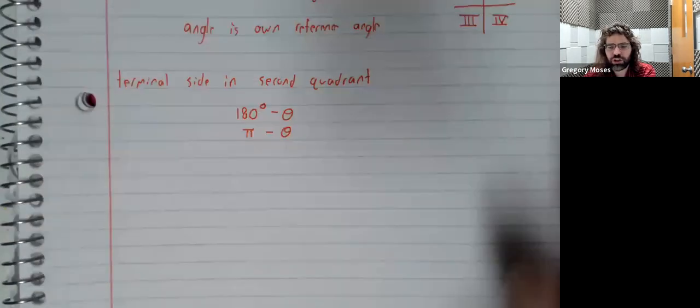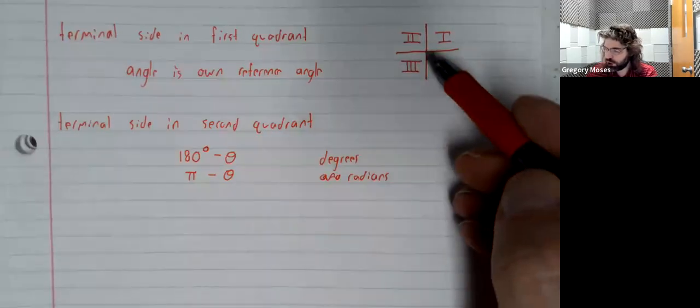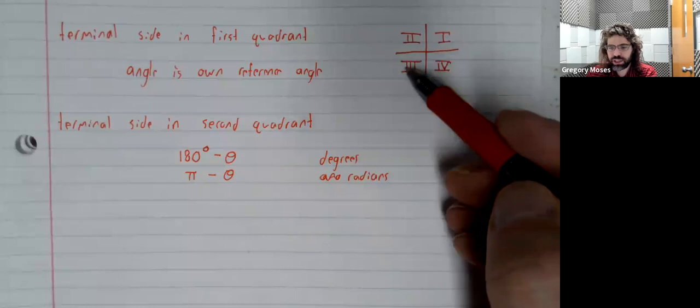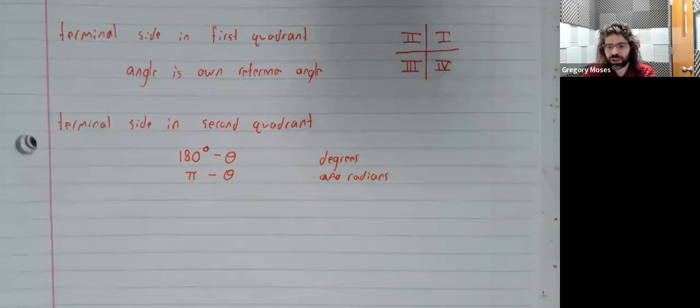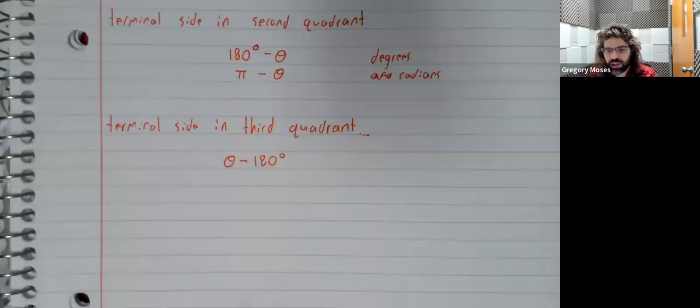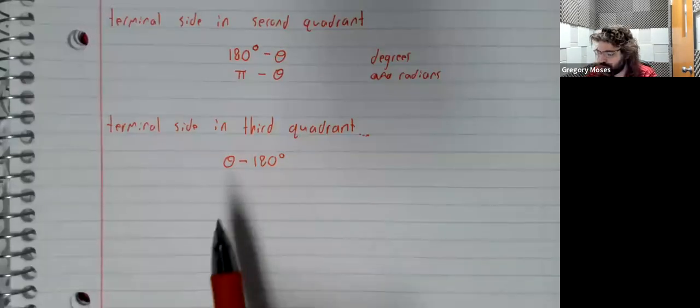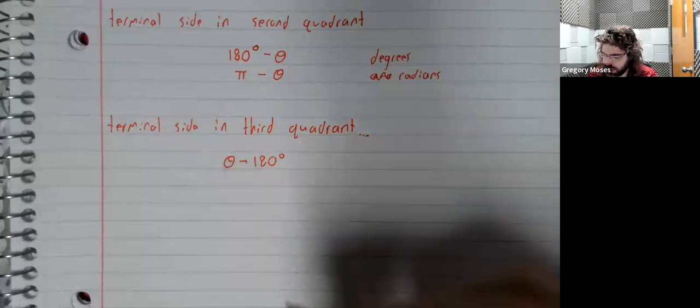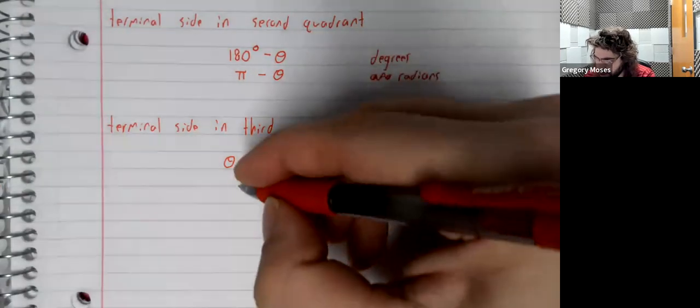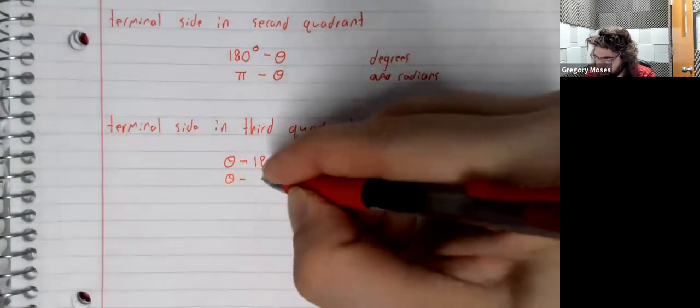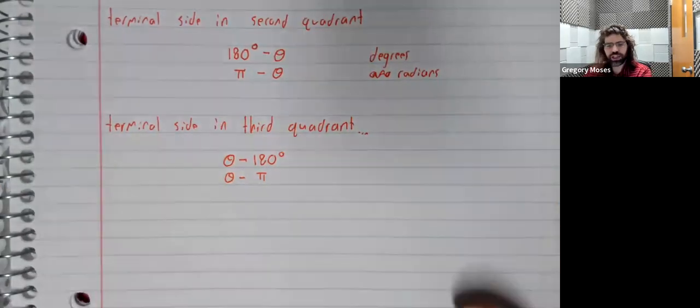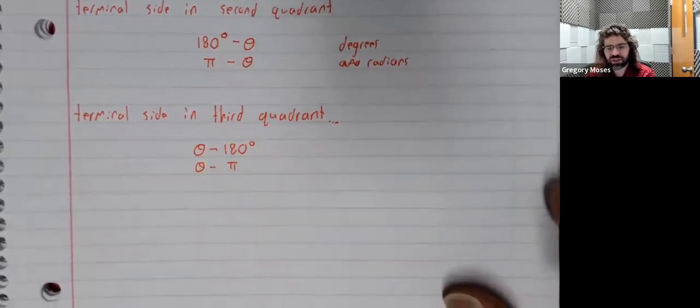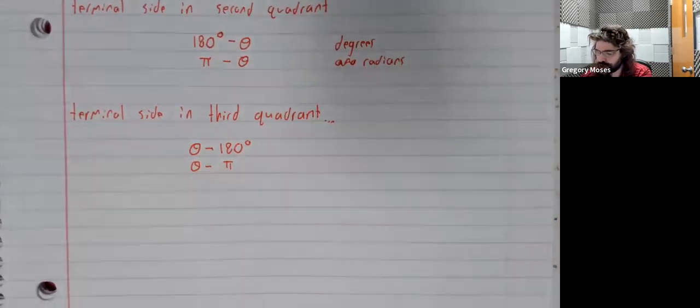If you're in the third quadrant, so if the terminal side is here, then the reference angle is going to be the angle minus 180 degrees. Or, again, if you're working in radians, theta minus π radians.